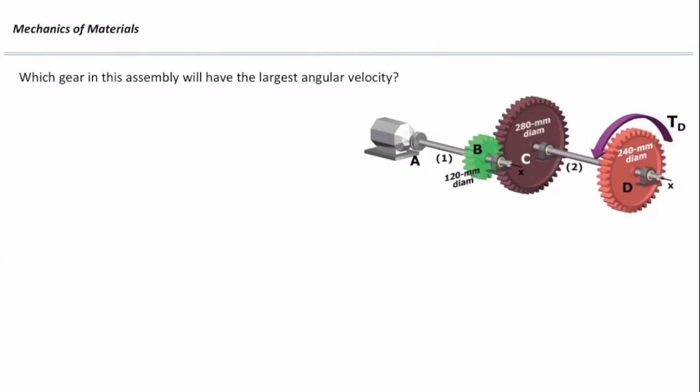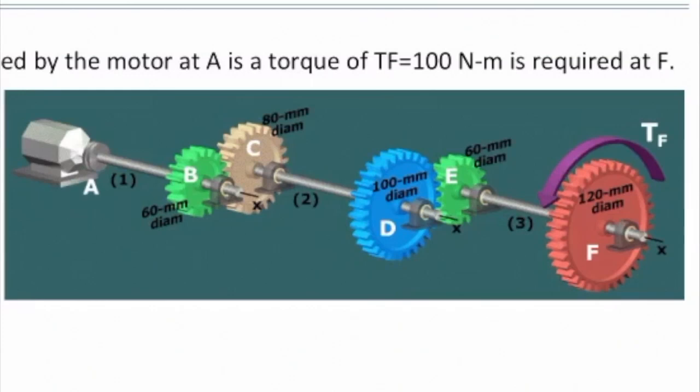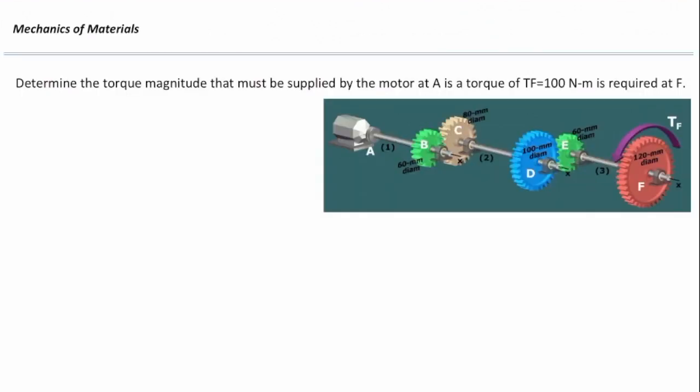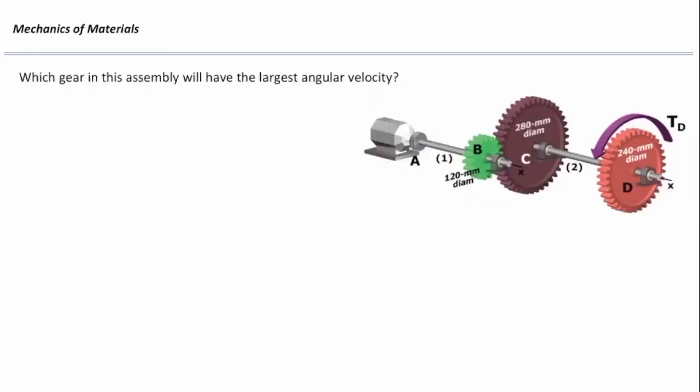Question number two is, consider this system, we want output of torque equal to 100 Nm. How much would be the input torque at motor to have the output equal to 100? So this requires a bit calculation, but the other one is just a conceptual question.